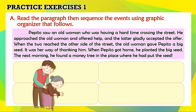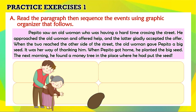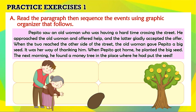Pepito saw an old woman who was having a hard time crossing the street. He approached the old woman and offered help, and the latter gladly accepted the offer. When the two reached the other side of the street, the old woman gave Pepito a big seed as her way of thanking him. When Pepito got home, he planted the big seed. The next morning, he found a money tree in the place where he had put the seed.